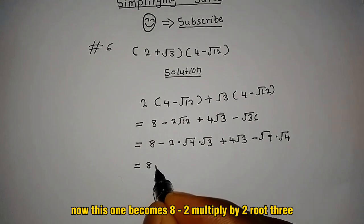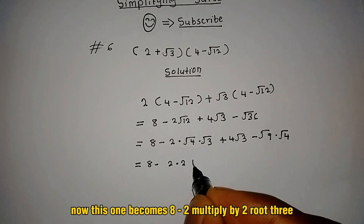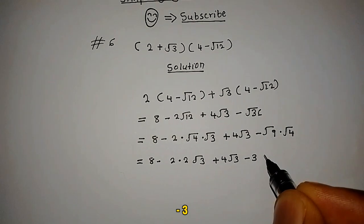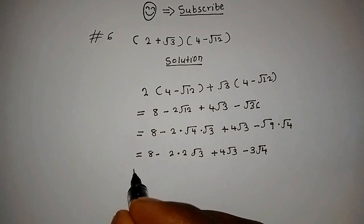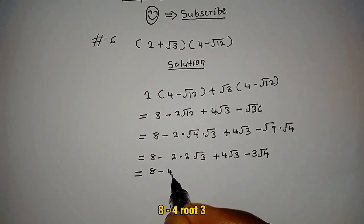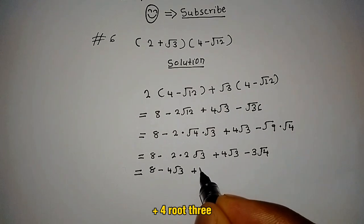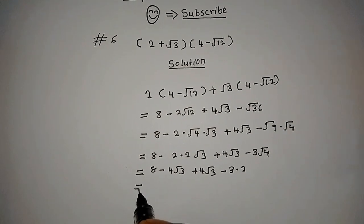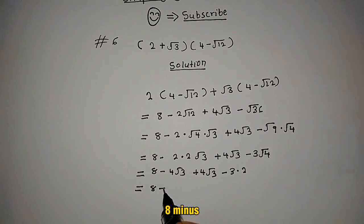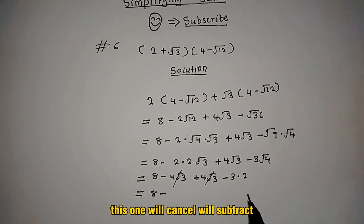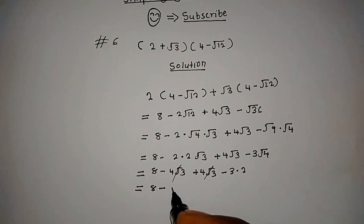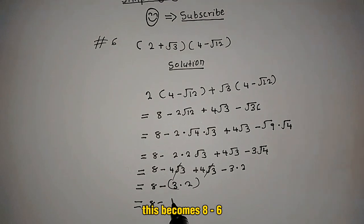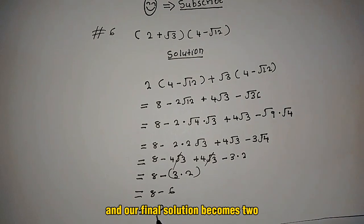This becomes 8 minus 2 multiplied by 2 root 3, plus 4 root 3, minus 3 root 4. Simplifying: 8 minus 4 root 3 plus 4 root 3 minus 3 multiplied by 2. The root 3 terms cancel, giving 8 minus 6, and our final solution is 2.